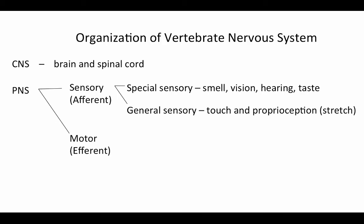These sensory systems can also be broken up into somatic sensory and visceral sensory. Somatic sensory has to do with the external covering of the body, whereas visceral sensory has to do with sensory of the internal organs. We're going to group them all into just special sensory and general sensory, each incorporating both somatic and visceral modalities.